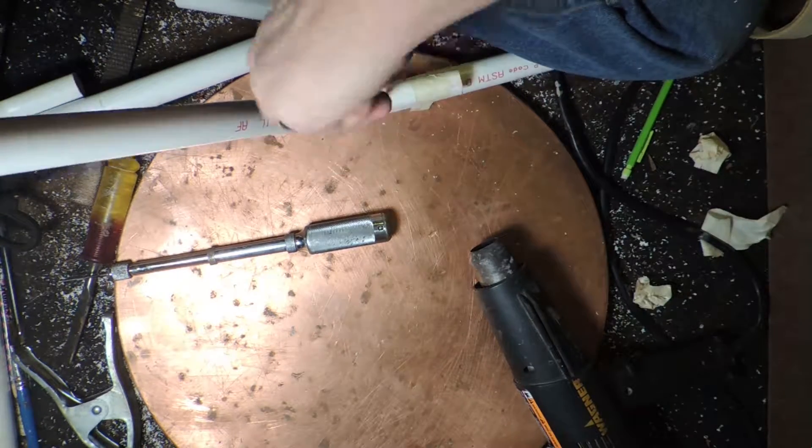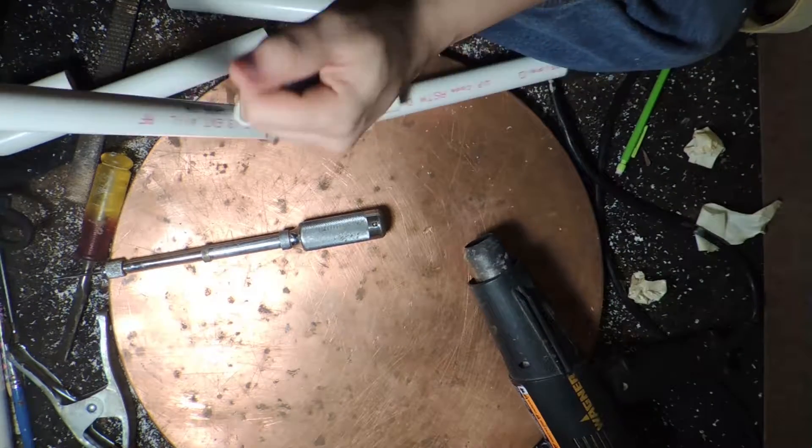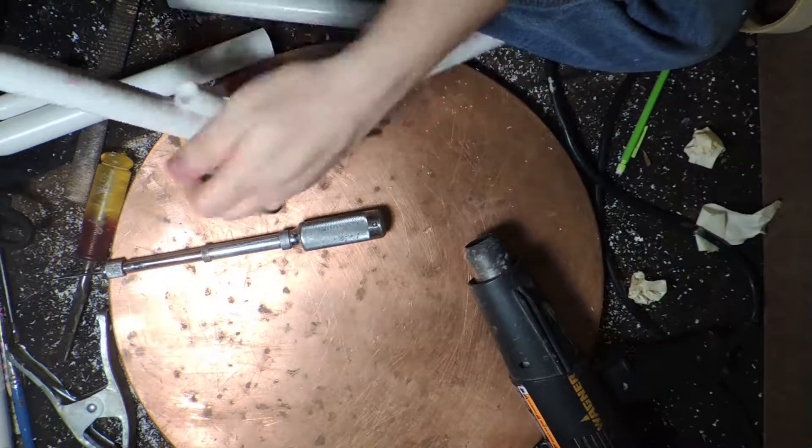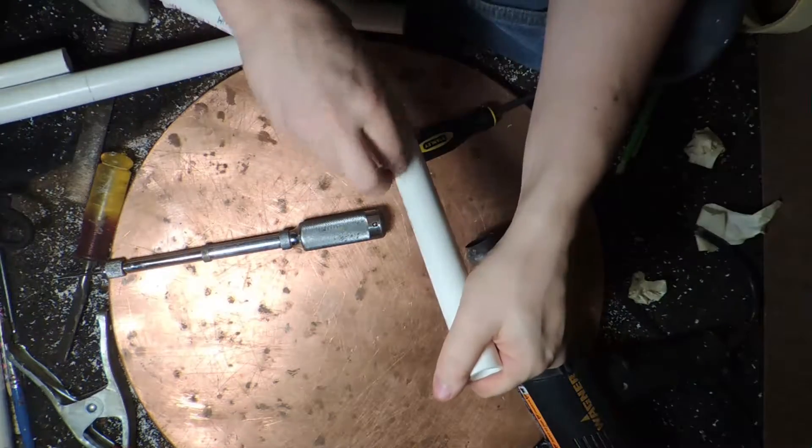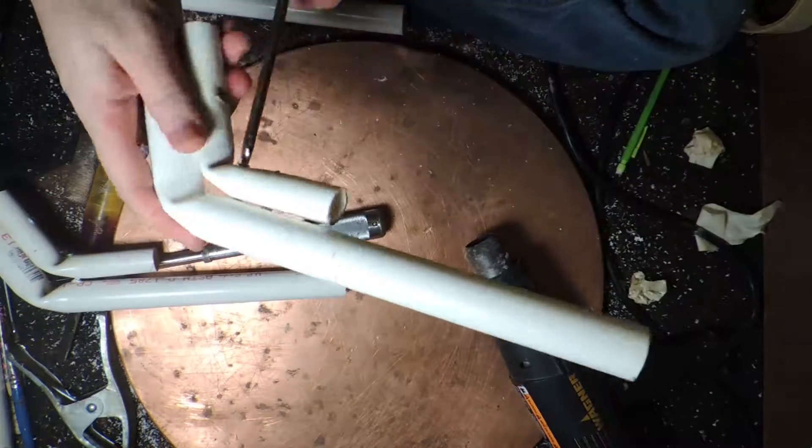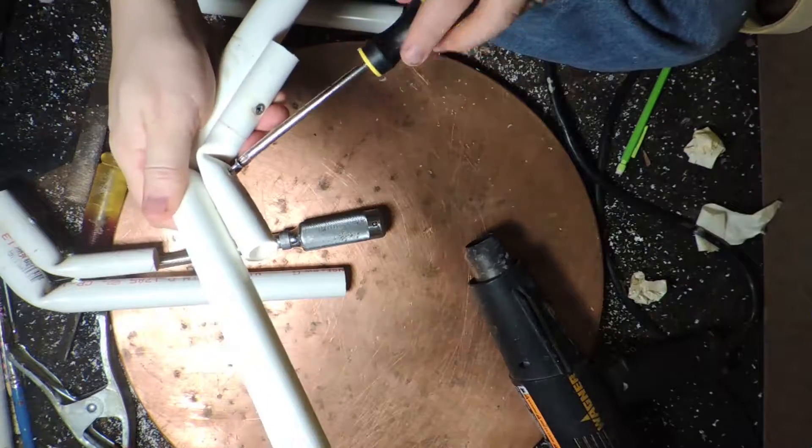Additionally, clamping down your PVC pipe when using a press drill is very beneficial. I've had pipes pop out underneath the pressure rather than have the drill go completely through it.